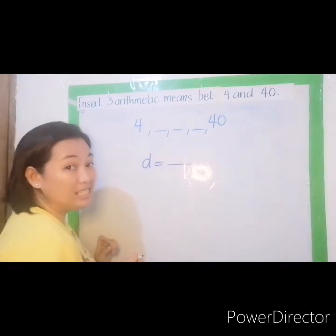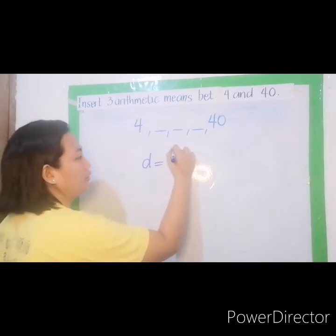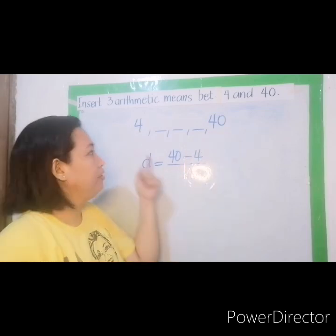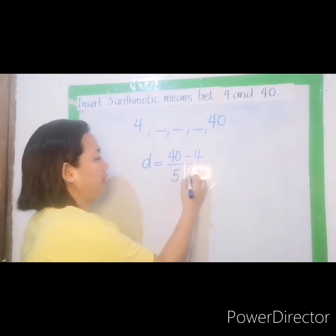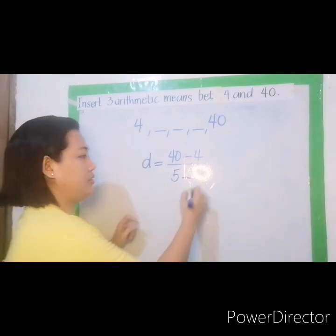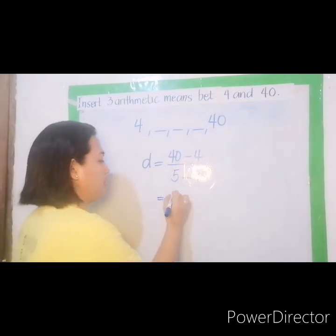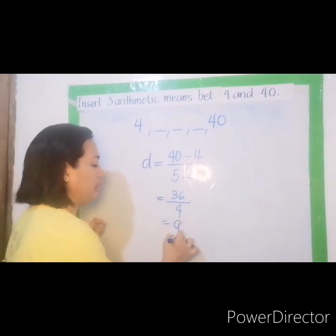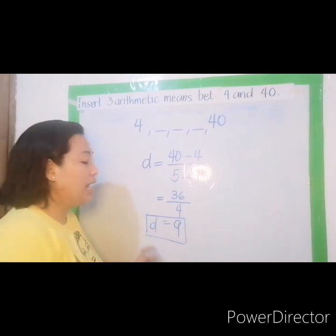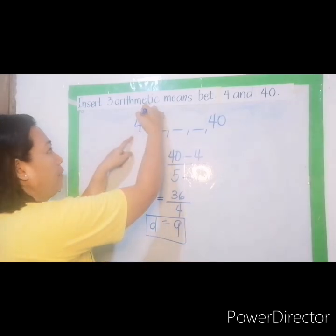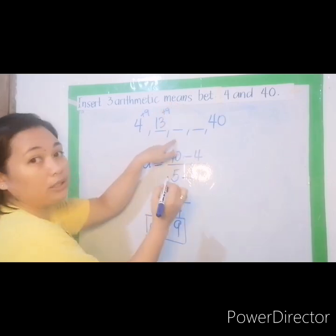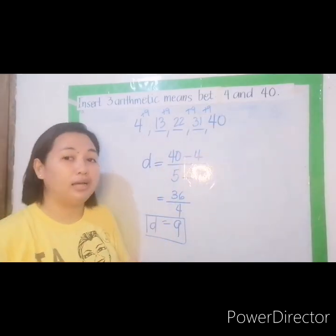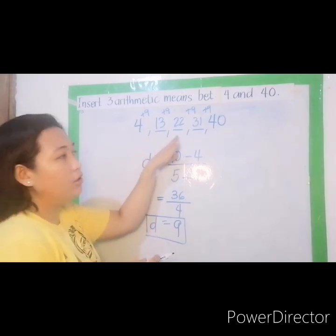D is equal to, all you have to do is subtract and divide. So 40 minus 4. Now, si 40 ay pakilang term: 1st, 2nd, 3rd, 4th, 5th. So 5. Minus si 4 ay pang ilang term, 1st. So 1. 40 minus 4 is 36 over 5 minus 1 is 4. 36 divided by 4 is 9. Therefore, your common difference is 9. Ibig sabihin, magdadagdag ka lang ng 9 simula kay 4. So 4 plus 9 is 13, plus 9 is what? 22. Plus 9 is 31. Plus 9 is 40. So meaning, tama yung ating sagot. So the 3 arithmetic means are 13, 22, and 31.